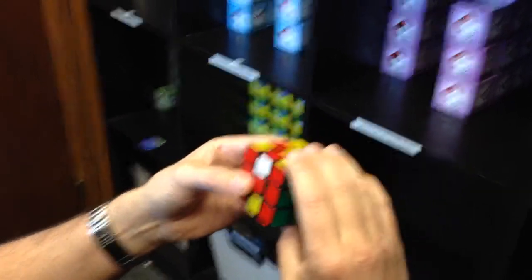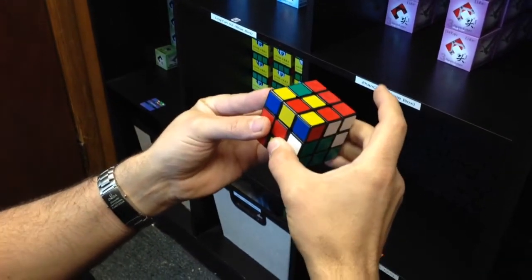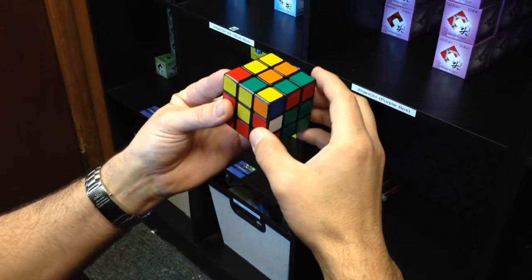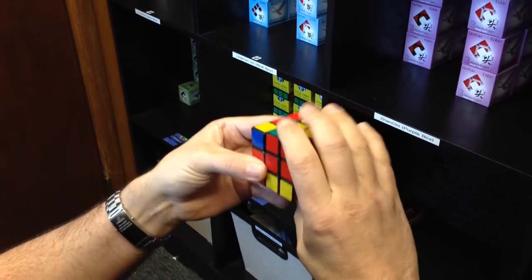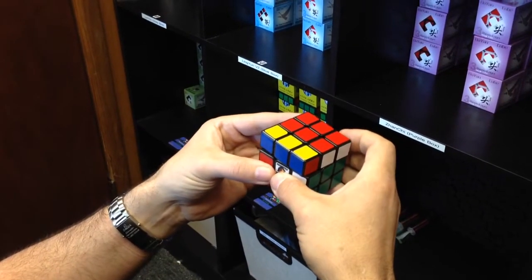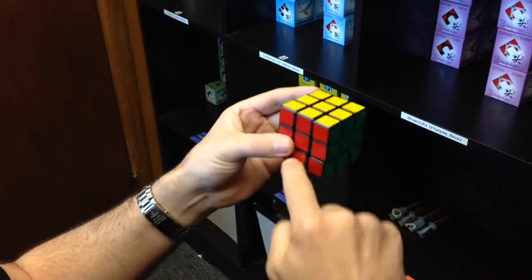It's actually just a unique algorithm. So what we're going to do is we're going to go R, U', R', U', M, U, R', U, R', and that will flip all six pieces.